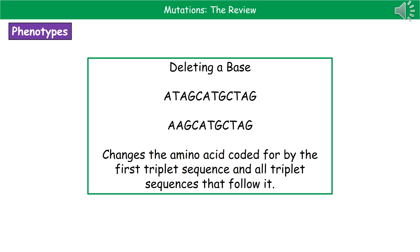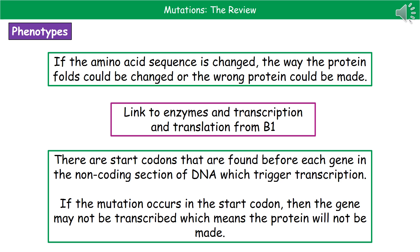Deletion can have far-reaching consequences for the shape of that protein. When we change the sequence of amino acids, the way that protein folds up to make its three-dimensional shape can change, meaning we could get a completely different protein shape or a completely different protein altogether — or proteins being made in the wrong place in the body. This has a strong link back to the work on enzymes, transcription, and translation from B1, so make sure you go over that before the second paper.